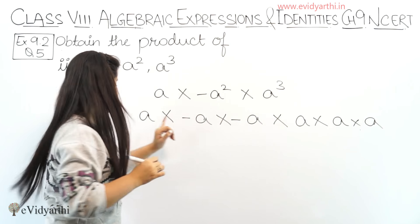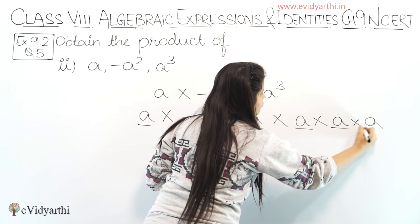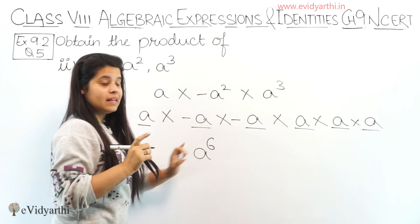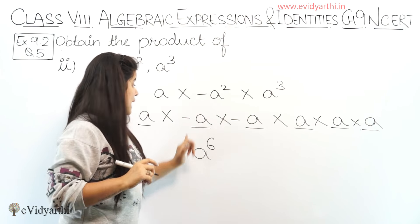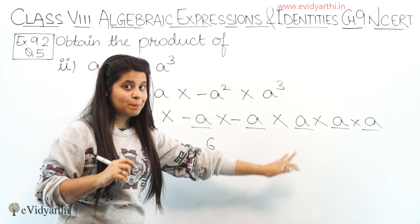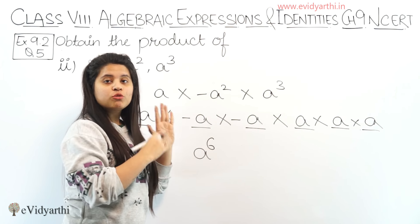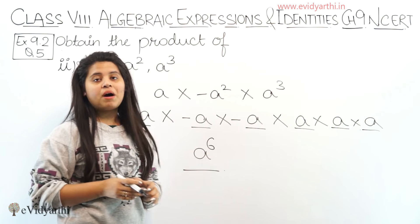Right? Now let's count total a's: 1, 2, 3, 4, 5, 6. Means a raised to the power 6. We have do jaga minus. So minus minus plus. Since we have two minus signs here, minus minus plus ho gaye. So the answer is a raised to the power 6.